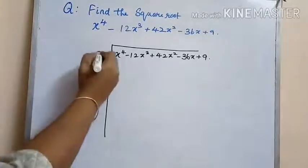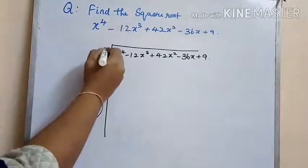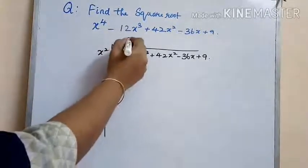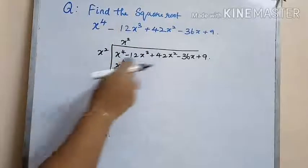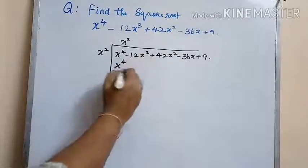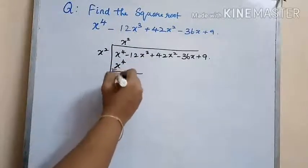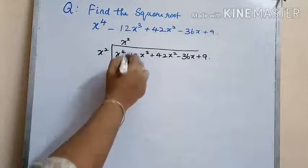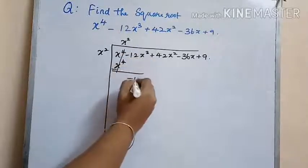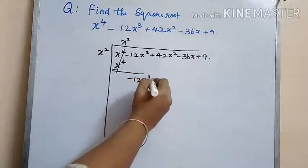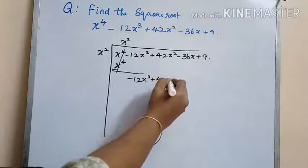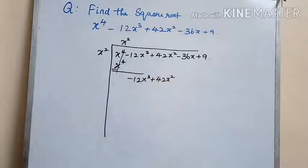We know that the square root of x to the power of 4 is x squared. Subtracting it and bringing down minus 12x cubed plus 42x squared to the next step.